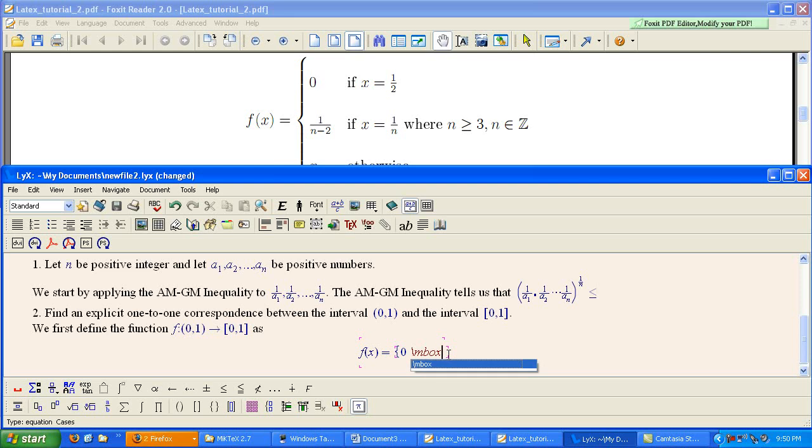Backslash mbox is going to give you regular text. Then hit space bar and you're going to do normal text. So, we'll have if and then a space and then we want to get out of the mbox. So, we have x equals backslash frac space bar 1 over 2.